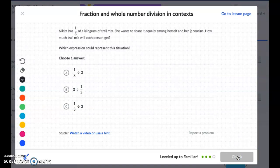Nikita has 1 third of a kilogram of trail mix. She wants to share it equally among herself and her two cousins. How much trail mix will each person get?